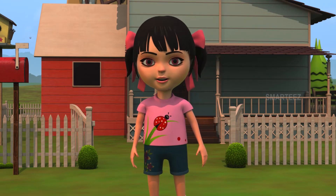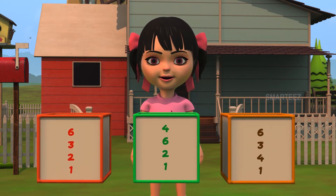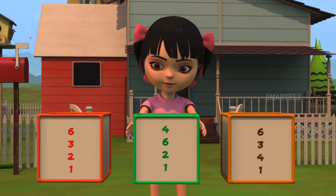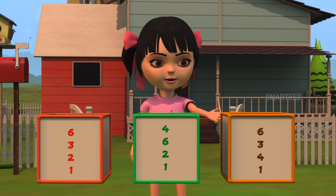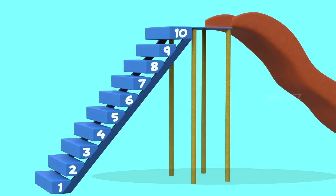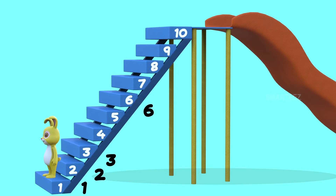Let's see another one. The bunny jumped down in a descending manner. Which one of these numbers is descending? Yes, this box has descending numbers. The bunny jumped from step 6 to step 3, then from step 3 to step 2 and finally from step 2 to step 1. So, the numbers went 6, 3, 2, 1. Since the numbers are going down, we call them descending numbers.